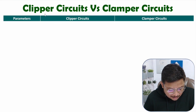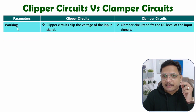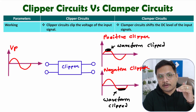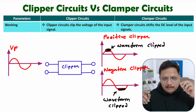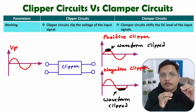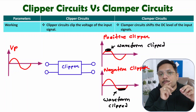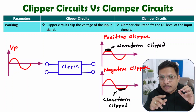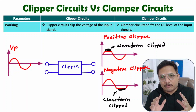Let us compare clipper and clamper circuits with respect to working first. When it comes to clipper circuit, we will be clipping the waveform at the output side. For example, if you have an input waveform that is sinusoidal, then you can clip the positive part or the negative part of the waveform. If you clip the positive part, that will be a positive clipper; if you clip the negative part, that will be a negative clipper.